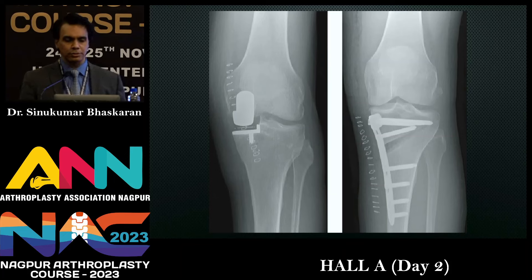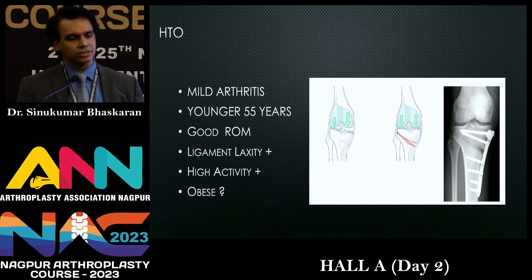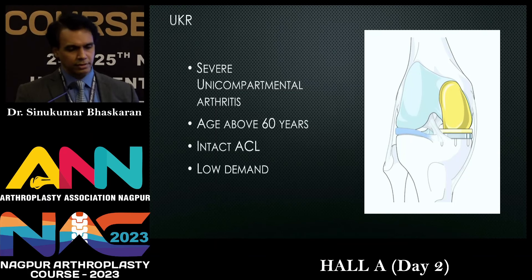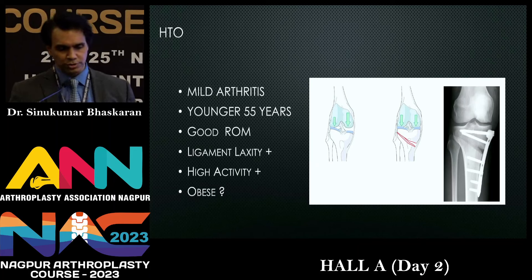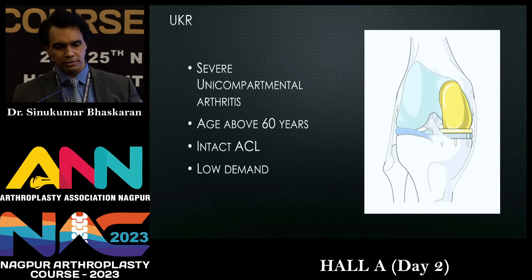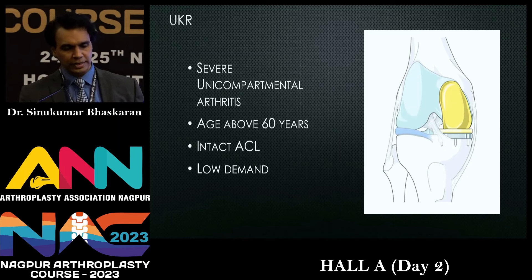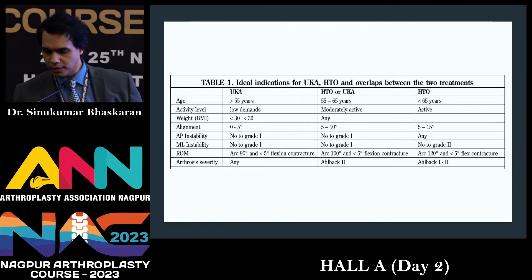The symptoms, age, sex — everything overlaps. Looking at indications for HTO: mild arthritis, younger patients, good range, ligament laxity — HTO scores on that, you can correct ligament laxity by changing your slope. High activity patients — HTO scores better. UKR can be considered in severe arthritis with complete bone-on-bone damage, and even in the elderly age group. Intact ACL is a must; low demand patients are a drawback for UKR.